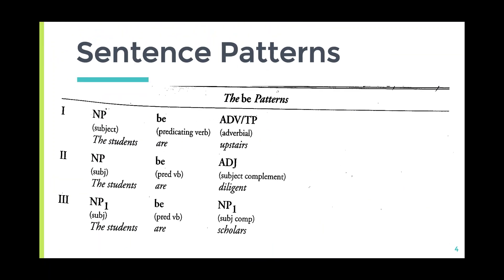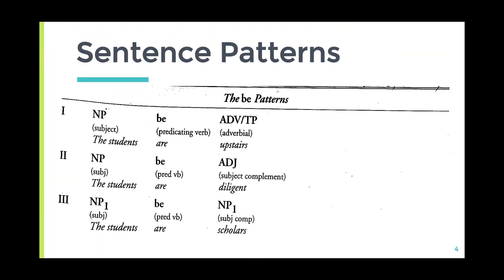Sentences could be understood in terms of pattern. If you consider the first three patterns, all of them have the verb 'to be' as the main verb. In the first pattern we have a noun phrase — this is the subject — and the verb 'to be' as a predicating verb, and an adverb either of time or of place.